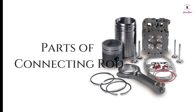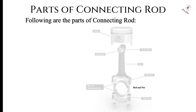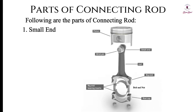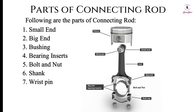Parts of a connecting rod. Following are the parts of a connecting rod: small end, big end, bushing, bearing inserts, bolt and nut, shank, wrist pin, piston, and bearing cap.